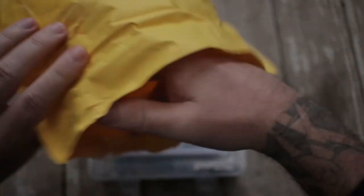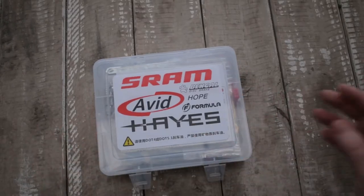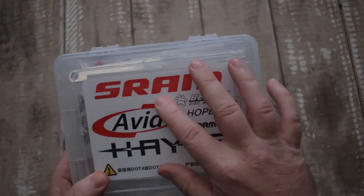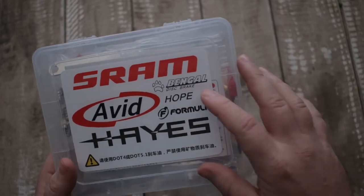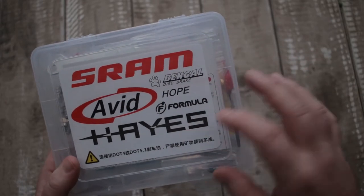Look at that. Any other free gift? Sometimes you get an extra freebie but not with this package. A nice little tackle box. Apparently you've got attachments in here for SRAM, Bengal, whatever that is, Avid, Hope Formula, Haze.